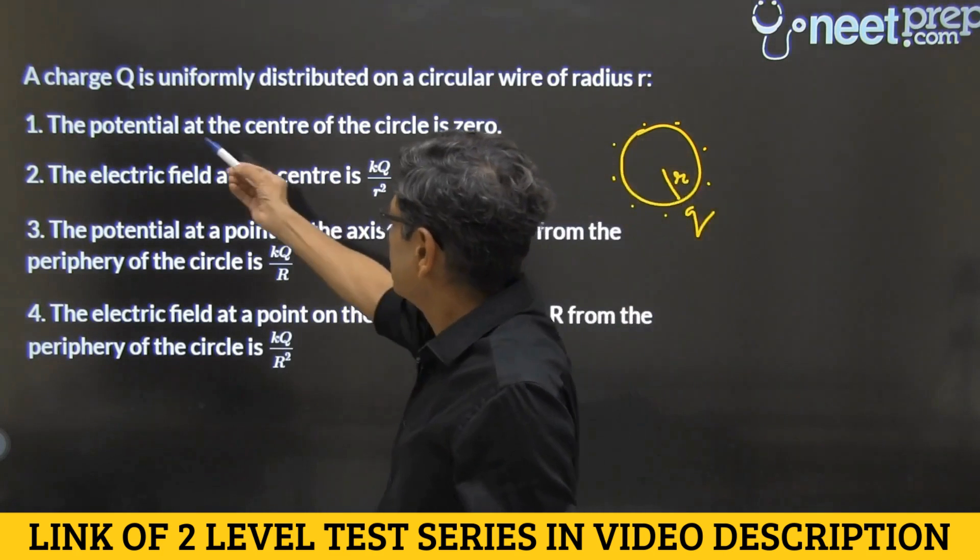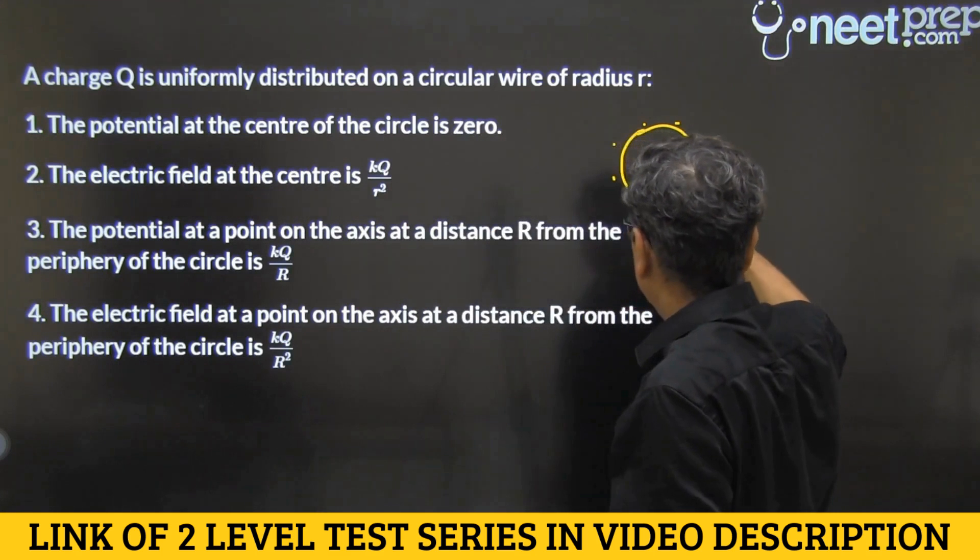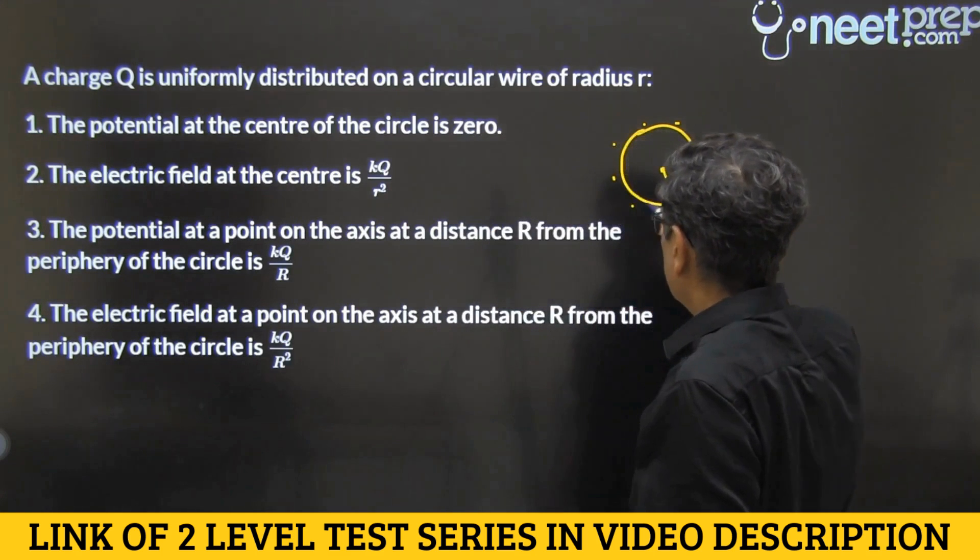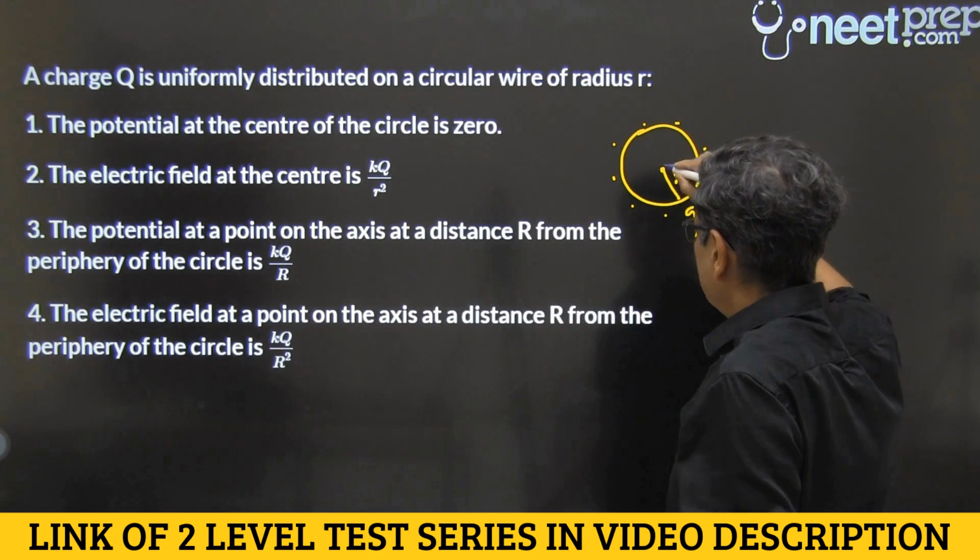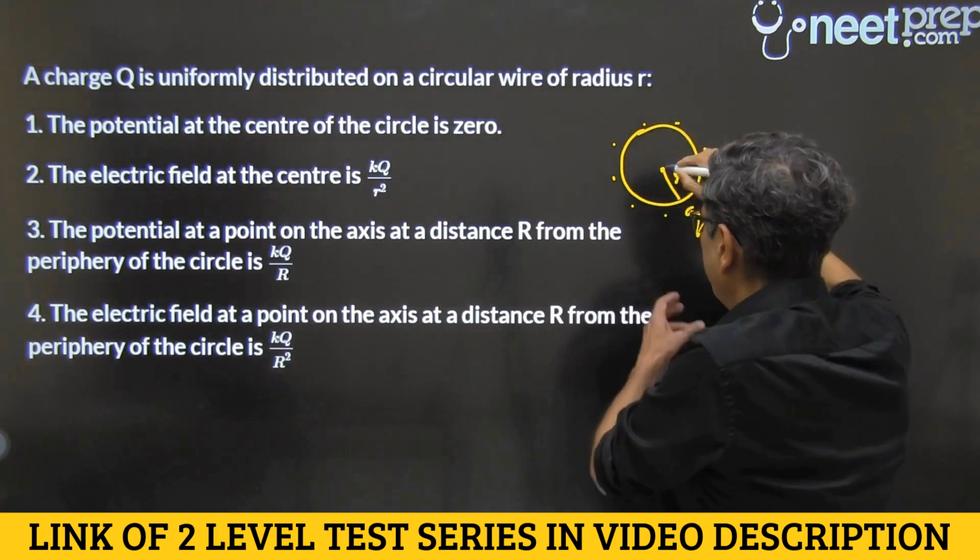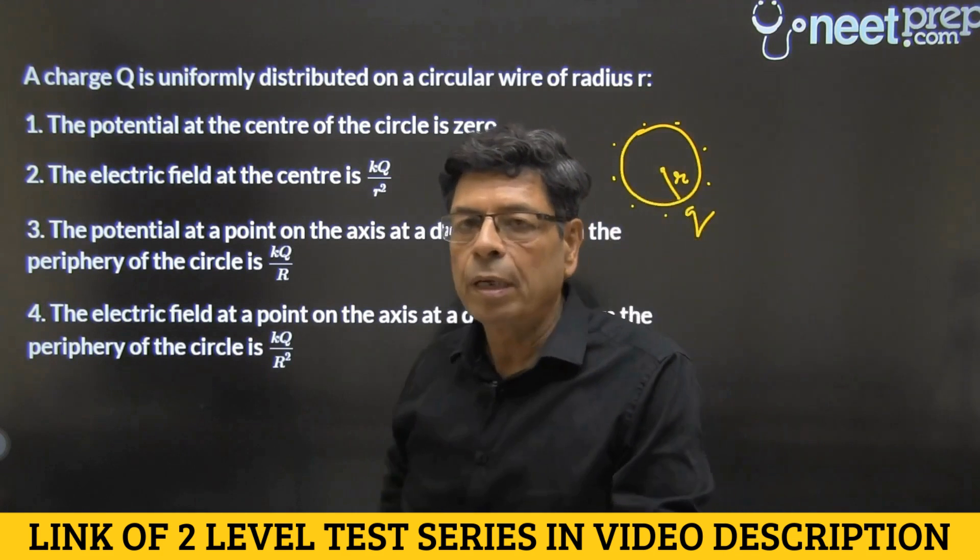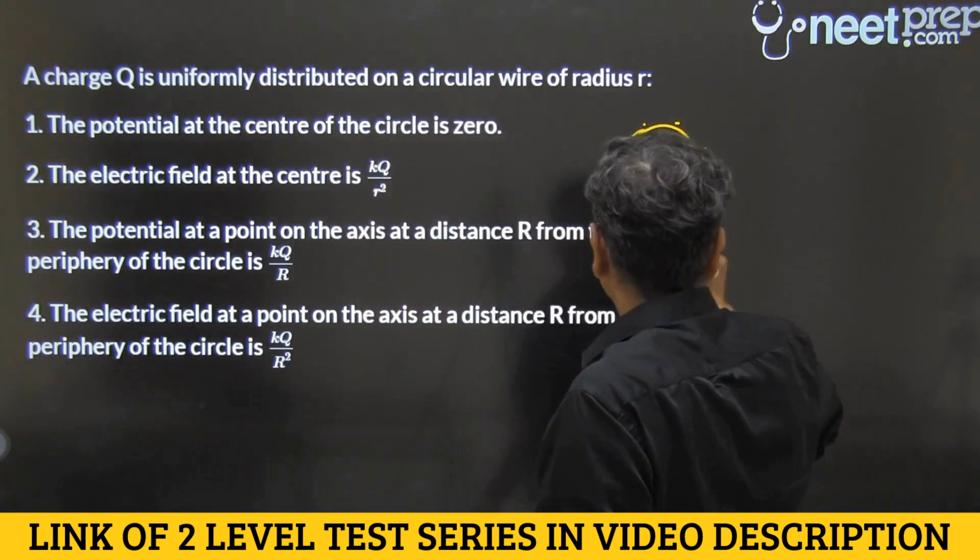Now option one says potential at the center of the circle is zero. Here the potential is zero. Sorry. The potential at the center, since the central point is equidistant from all peripheral points, you can use the formula.